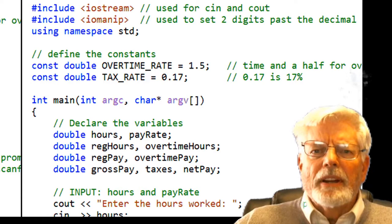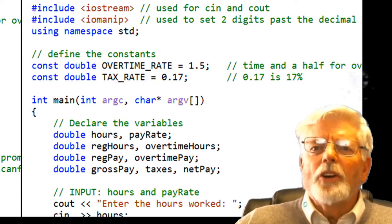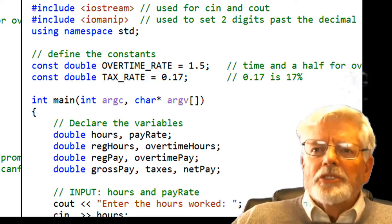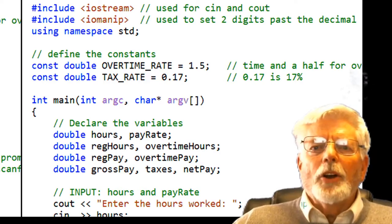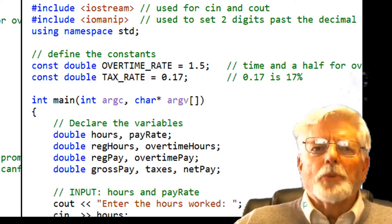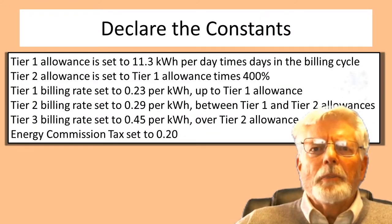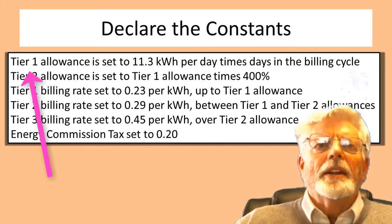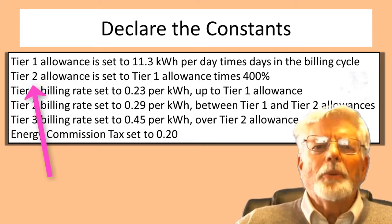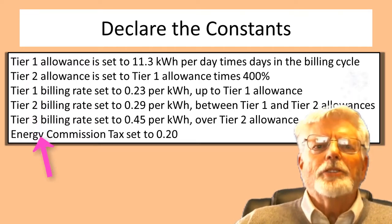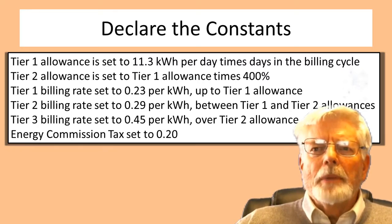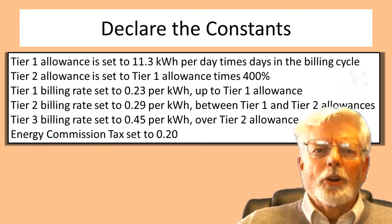After the constants have been declared, the line int main(int argc, char* argv[]) and its opening curly brace identify the code to be executed when the program runs. Looking at the project definition, declarations of constants are needed for the tier 1 allowance, tier 2 allowance, billing rates for tier 1, tier 2, and tier 3, and the energy commission tax. The way these statements are written in English is good for people to read but must be converted into code using the proper syntax rules for your language.